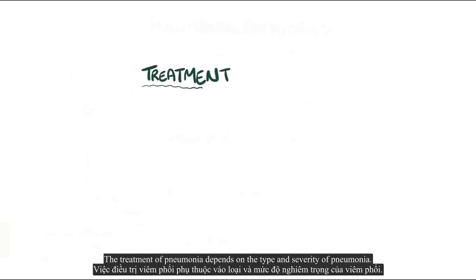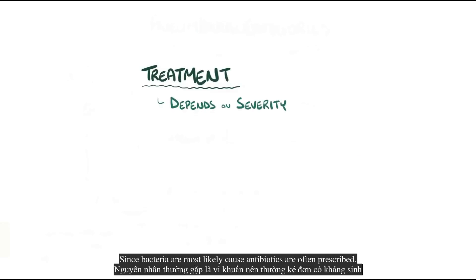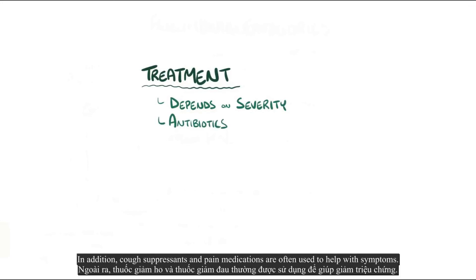The treatment of pneumonia depends on the type and severity. Since bacteria are the most likely cause, antibiotics are often prescribed. In addition, cough suppressants and pain medications are often used to help with symptoms.